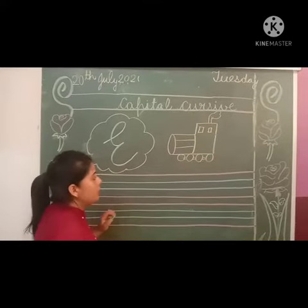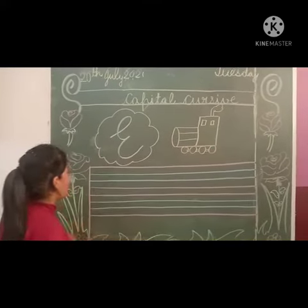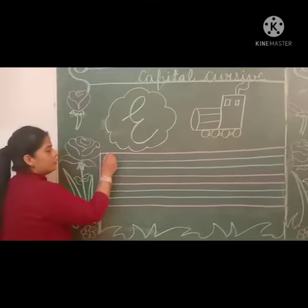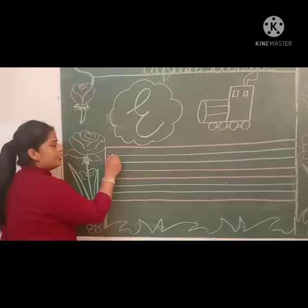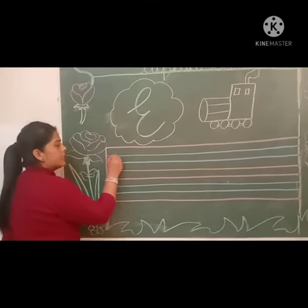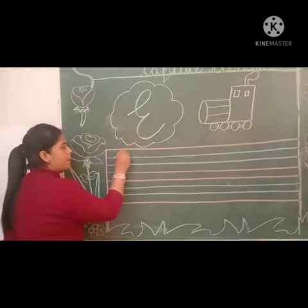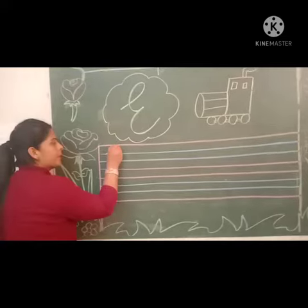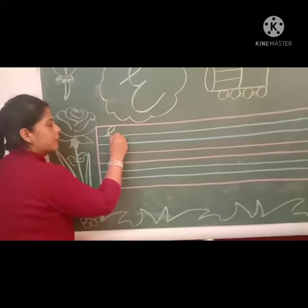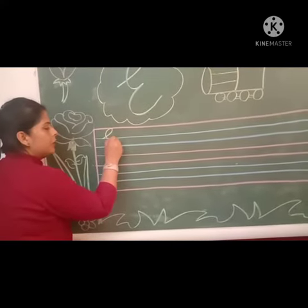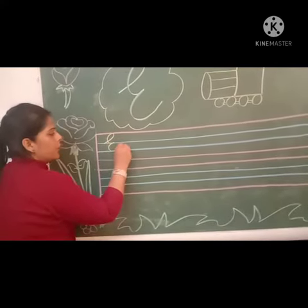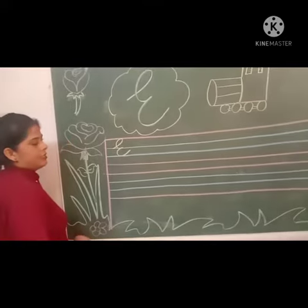Children, so how to write letter E? Start from here. Second line — start from the second line. Slanting and up, come back. Make a curve. One, two — and like this.